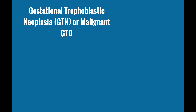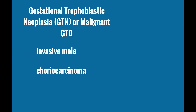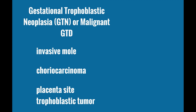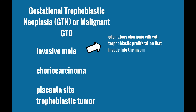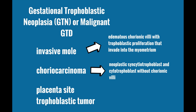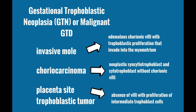Gestational trophoblastic neoplasia, or malignant GTD, can develop from an invasive hydatidiform mole, from a choriocarcinoma, or a placental site trophoblastic tumor. Invasive moles are characterized by edematous chorionic villi with trophoblast proliferation that can invade into the myometrium. Choriocarcinomas can come from normal pregnancies or molar pregnancies, and they are composed of neoplastic syncytiotrophoblast and cytotrophoblast without chorionic villi.